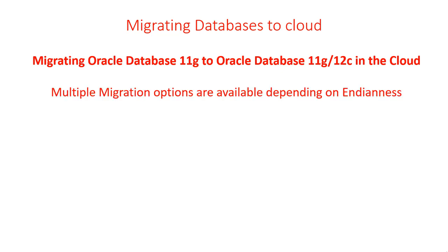Multiple migration options are available depending on the endianness of your systems. Endianness refers to the sequential order in which bytes are arranged into a larger numerical value when stored in memory or transmitted over a network. There are two types: big-endian, where values go from higher to lower, and little-endian, where bytes are ordered from the smallest to the most significant bit.